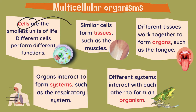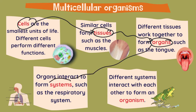So to sum up: cells form tissues, tissues work together to form organs, some organs interact and form systems, and different systems form an organism.